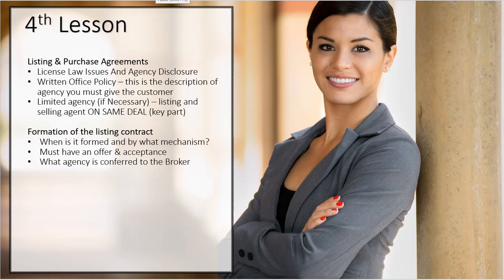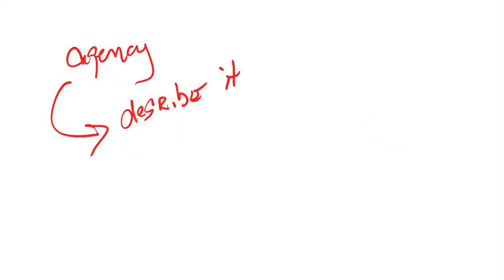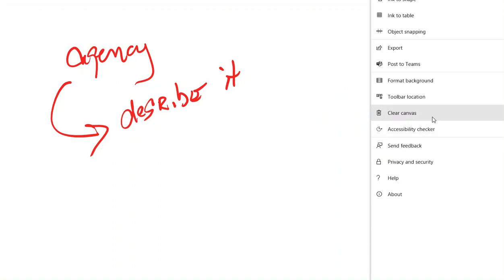Welcome back, we're still here on the fourth lesson and we are going to talk a little bit more about the formation of the listing contract. Remember that this formation is between the listing agent and the seller when this contract gets formed.